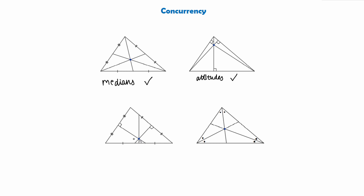In this third diagram we have the three perpendicular bisectors — be sure to check out our video on them. If you remember, a perpendicular bisector passes through the middle of one side and meets it perpendicularly, so it goes perpendicularly to the midpoint of one line. We have all three perpendicular bisectors and as we can see they are also concurrent.